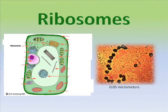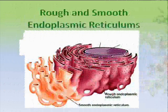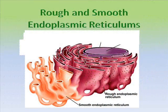Ribosomes are tiny cell particles that assemble enzymes and proteins. Rough and smooth endoplasmic reticulums — both of these are pathways, although the rough transports proteins with ribosomes and smooth carries oils and fats without ribosomes.